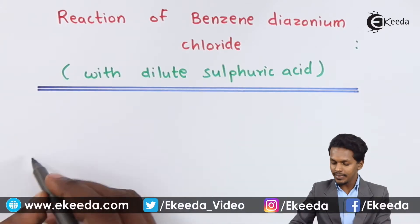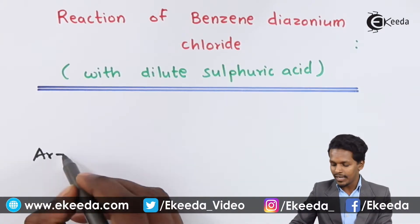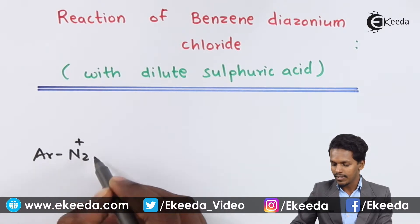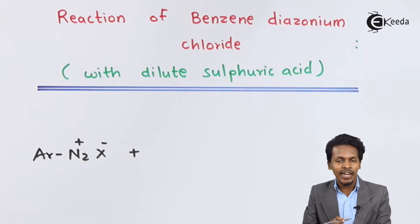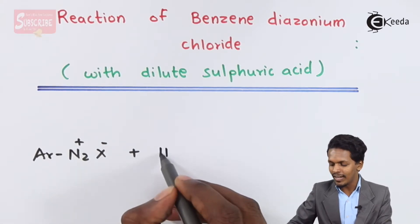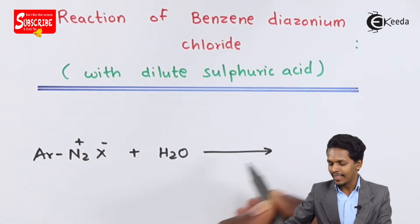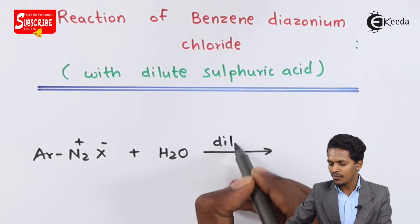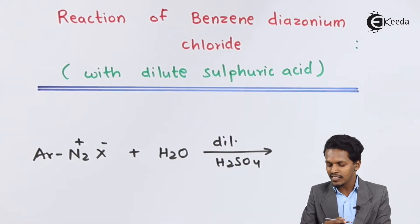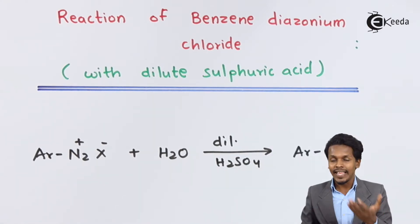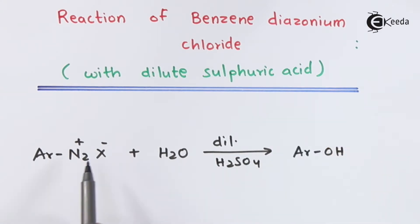Whenever we treat an aromatic or aryl diazonium salt with dilute sulfuric acid, it will react with H2O in the presence of dilute sulfuric acid. The reaction will proceed such that the product we get is phenol. We can replace this N2X with an OH group.